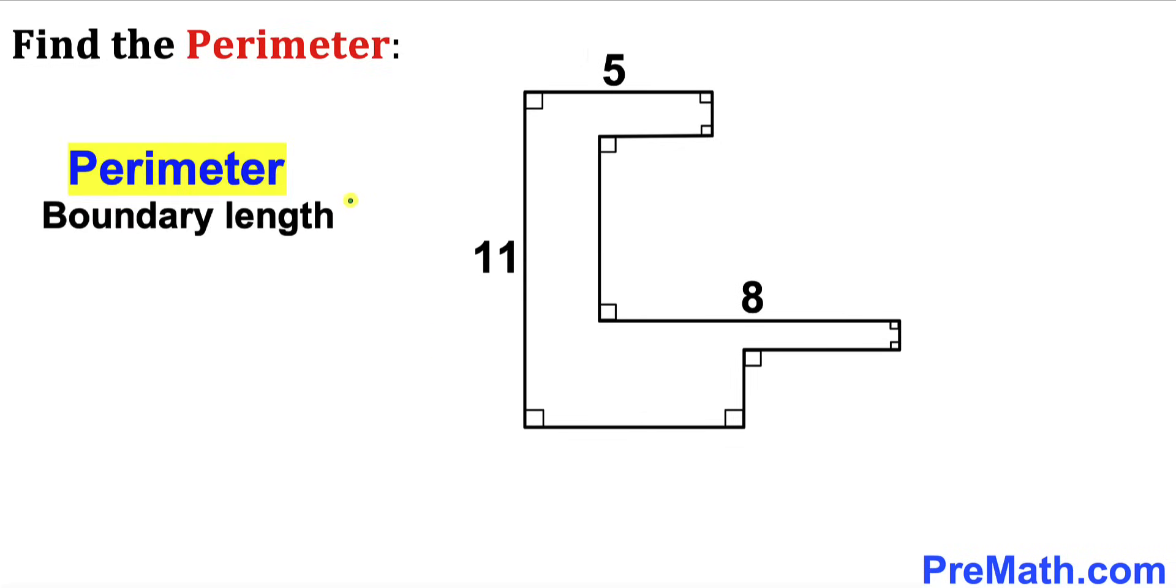Let's go ahead and get started. We know the perimeter is just the sum of all these individual boundary lengths as you can see, so we are going to calculate all this length. Here is our very first step. Let's focus on the vertical lines.